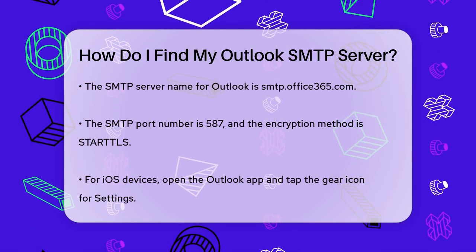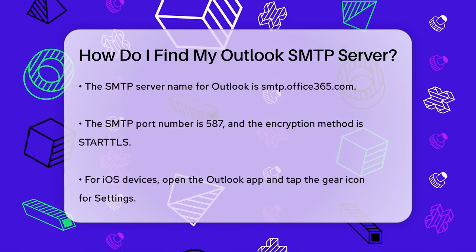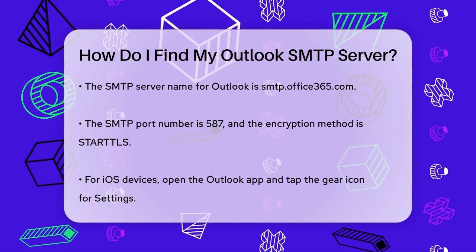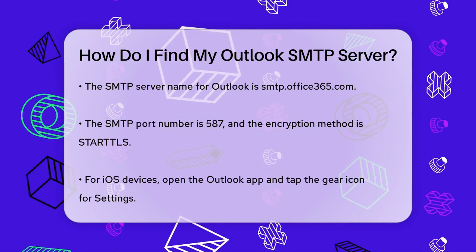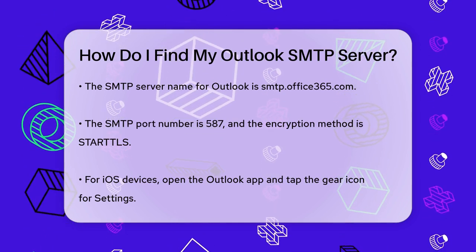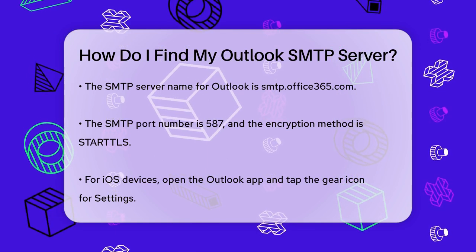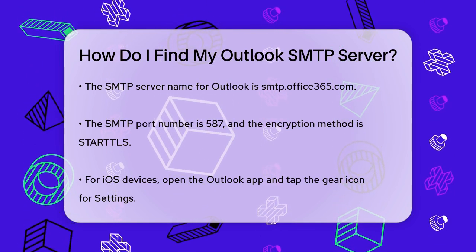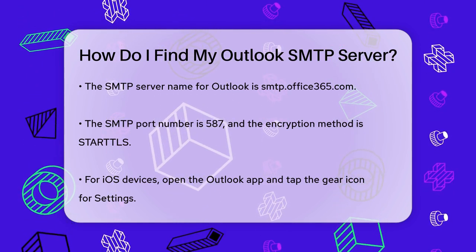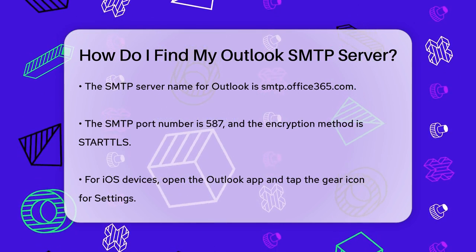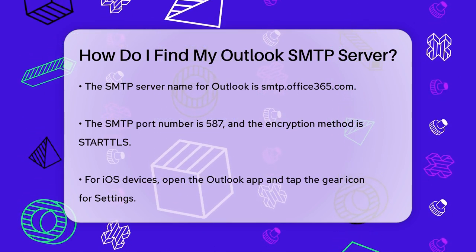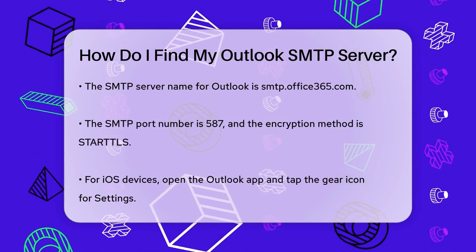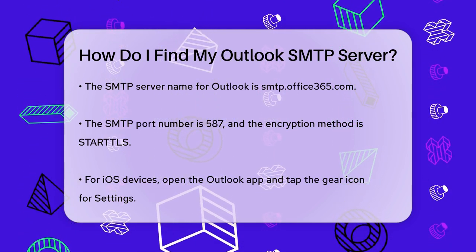If you're using Outlook on your iOS device, the process is a bit different. Open the Outlook app, go to Settings by tapping the gear icon, and select the email account you need the SMTP settings for. Tap on Account Details and look for the section labeled Outgoing Mail Server or SMTP. Here, you'll find the outgoing server address and port number.